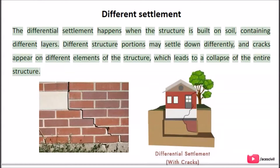Differential settlement happens when the structure is built on soil containing different layers. Different structure portions may settle down differently, and cracks appear on different elements of the structure, which leads to a collapse of the entire structure.